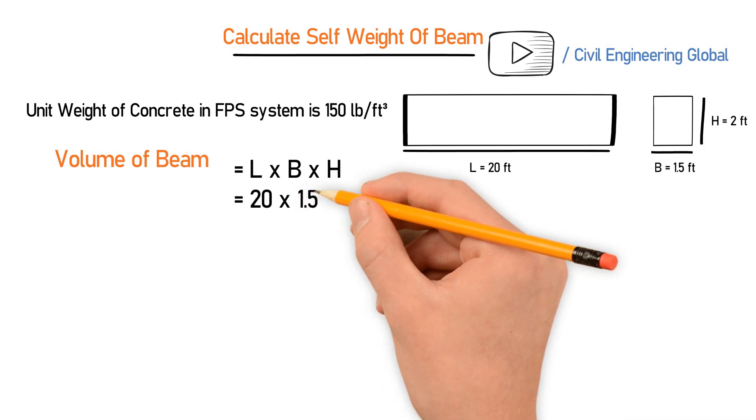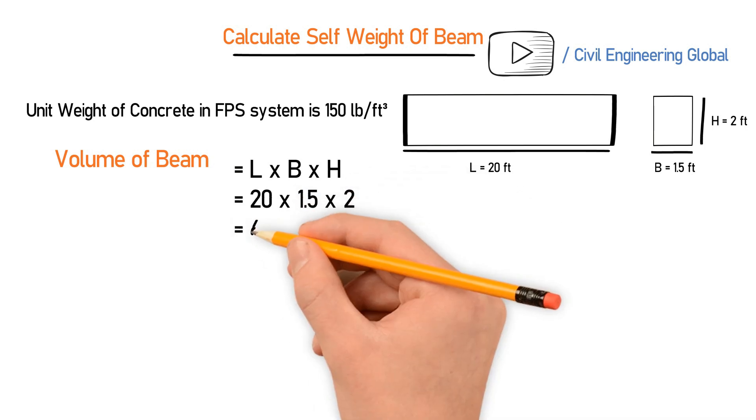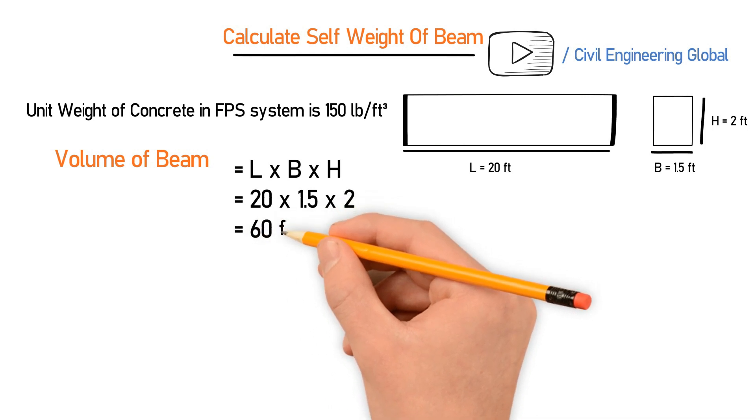multiplied by height which is 2. This will give you 60 cubic feet, so this is the volume of this beam.